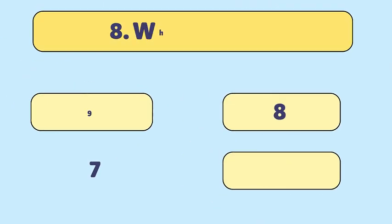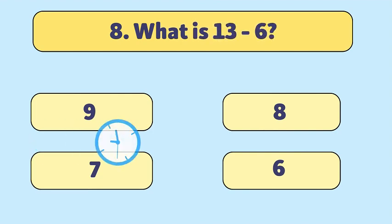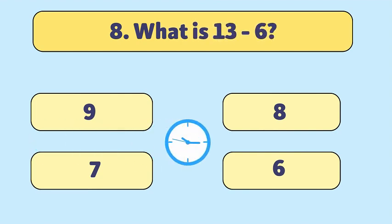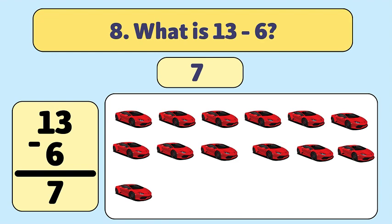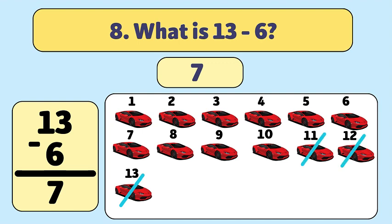What is 13 minus 6? The answer is 7. We start with 13 cars and take away 6. Let's count: 1, 2, 3, 4, 5, 6. We have 7 cars now.